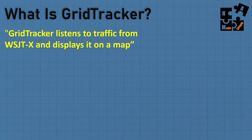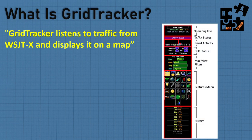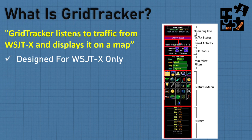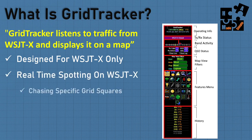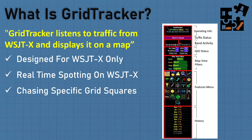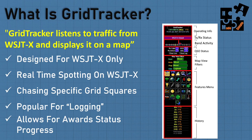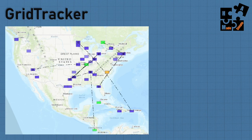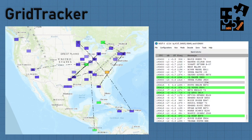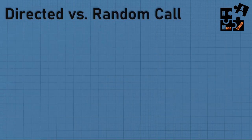GridTracker listens to traffic from WSJT-X and displays it on a map. It has a longer learning curve, but if you use FT8 or FT4, you'll want to learn it. It's designed for real-time spotting, chasing specific grid squares, showing where you've been and what's on your checklist. It's popular for logging contacts and can even track award status progress. There's nice integration between WSJT-X and GridTracker — the WSJT-X screen looks a lot like Whisper, but the mode is used for GridTracker.